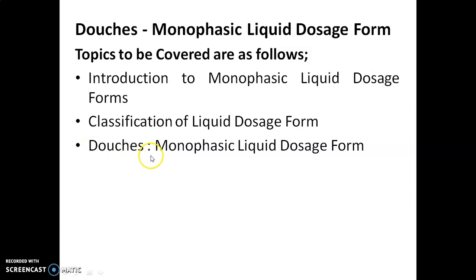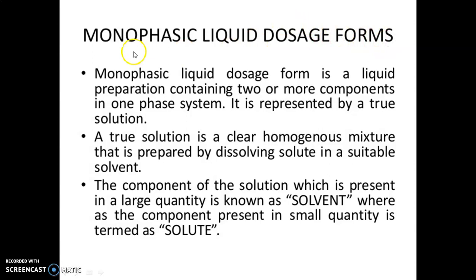Monophasic liquid dosage form is a liquid preparation containing two or more components in a one-phase system. It is represented by a true solution. A true solution is a clear homogeneous mixture that is prepared by dissolving solute in a suitable solvent. The component present in a large quantity is known as solvent, whereas the component present in a small quantity is termed as solute.